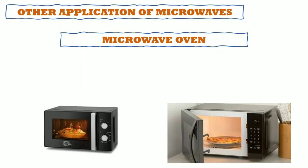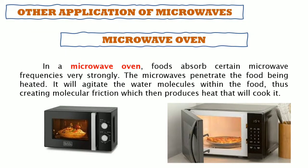Another application of microwaves is the microwave oven. In a microwave oven, foods absorb certain microwave frequencies very strongly. The microwaves penetrate the food and agitate the water molecules within it, creating molecular friction which produces heat that cooks the food. We can use it to reheat food or cook items like pizzas, cakes, lasagna, or other pastries.